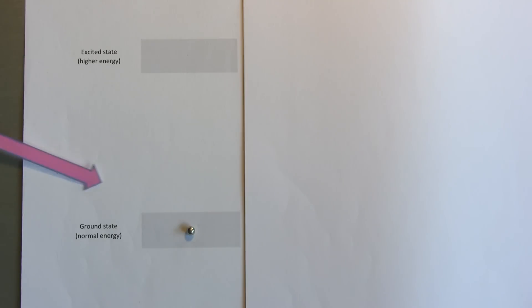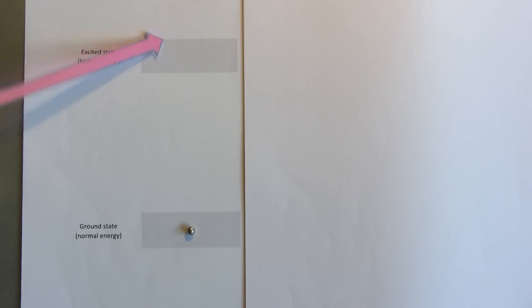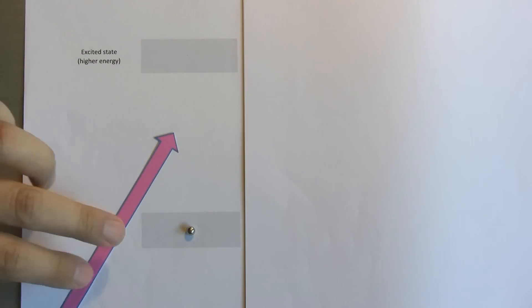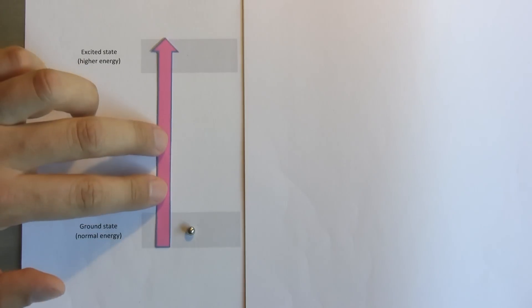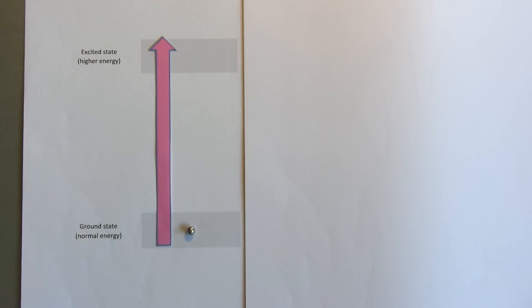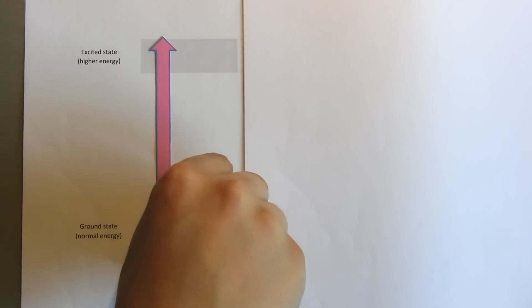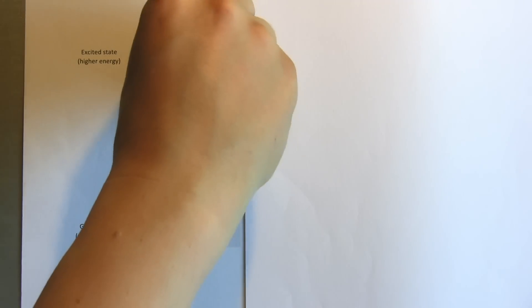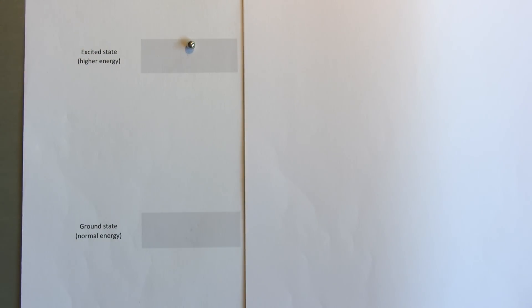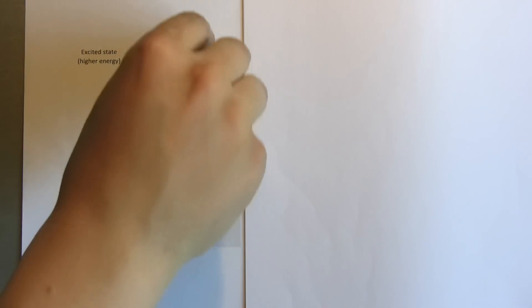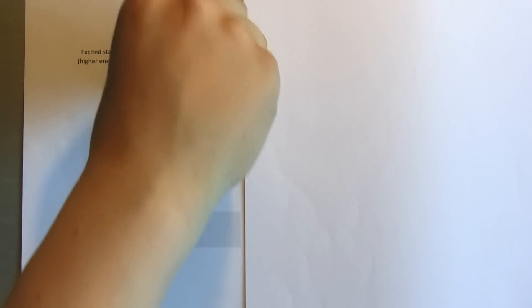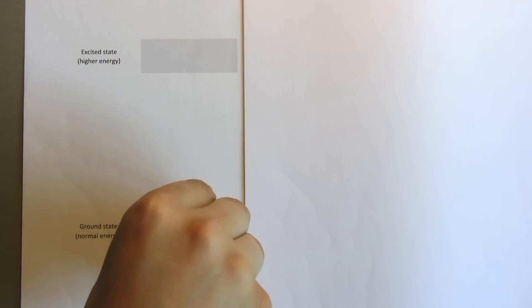When the electron is hit by a photon of UV light with the exact right amount of energy, the photon and all of its energy is absorbed by the electron. The electron is pushed out to a higher orbit by this energy transfer, but the electron doesn't want to stay in this excited state.